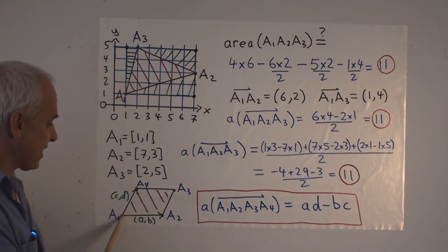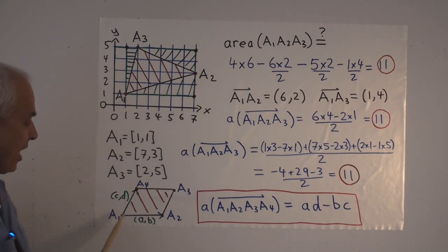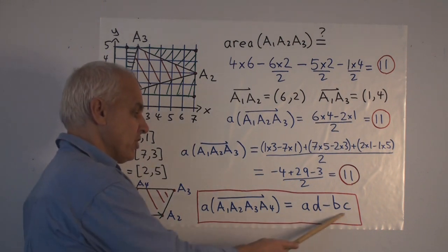Then, in this case, the area of this parallelogram will be twice the area of that triangle formed by those two vectors. So it will just be AD minus BC, not over 2, but just by itself.